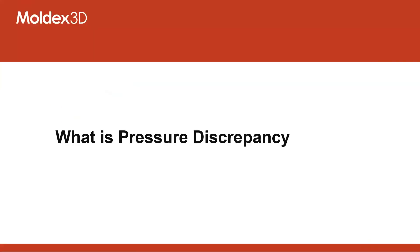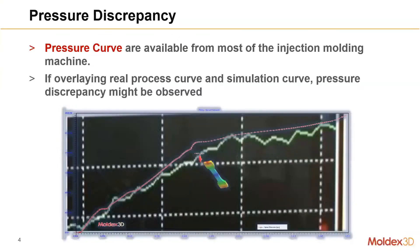So let's get started. What is pressure discrepancy? Pressure discrepancy is the tendency difference between reality and simulation. We can get the pressure curve from most injection molding machines, and if we overlay the pressure curves from simulation with reality, we might observe some tendency and slope difference between reality and simulation.